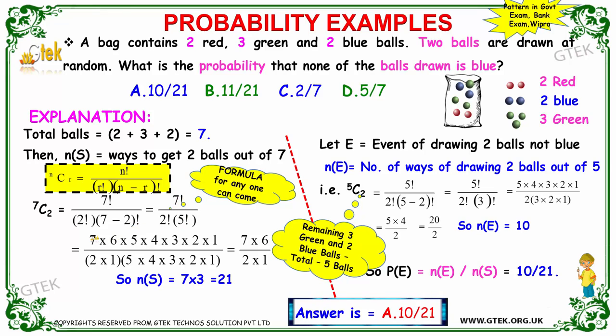7 factorial can be written as 7 × 6 × 5 × 4 × 3 × 2 × 1, and 2 factorial is 2 × 1, 5 factorial is this one. Satisfying these conditions you got 7 × 6, this one will get cancelled. 7 × 6 divided by 1 × 2, so the number of sample space is 7 × 3, that's 21.